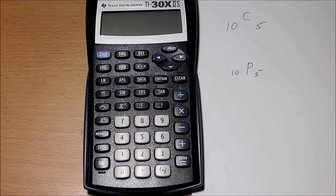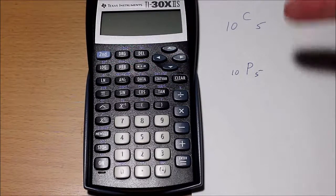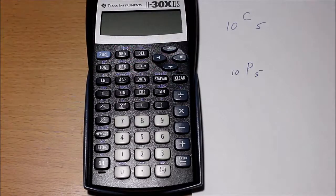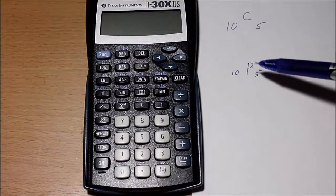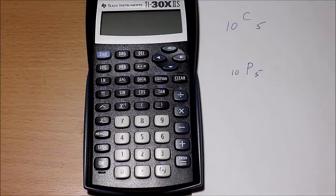Alright, so let's take a look at doing combinations and permutations on a TI-30X2S. I've got two problems here that I want to work. I've got combination 10 choose 5 and permutation 10 choose 5.